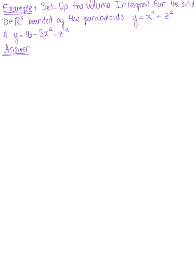Find the volume of the solid region D in R³ bounded by the paraboloids y equals x squared plus z squared, and y equals 16 minus 3x squared minus z squared.